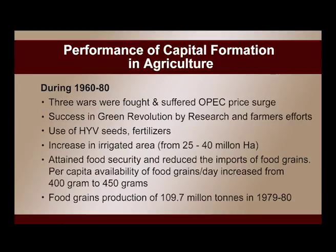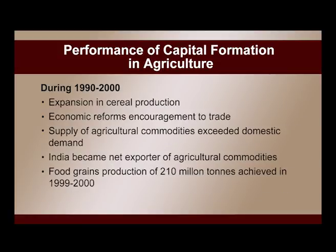By the efforts of research and farmers' use of high-yielding seeds and fertilizers, irrigated area increased from 25 to 40 million hectares — a great achievement in the form of capital formation. India attained food security and reduced food imports. Per capita availability of food grains increased from 400 to 450 grams. Food grain production in 1979-80 stood at 11 million tons. During 1990 to 2000, special features included expansion in cereal production and economic reforms.